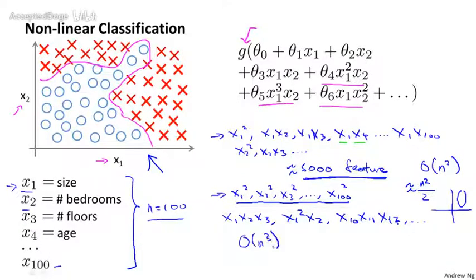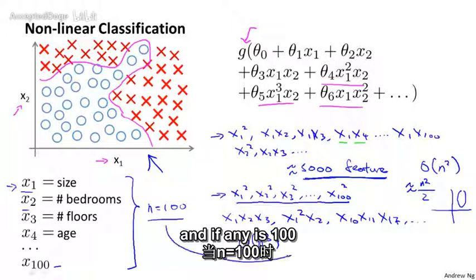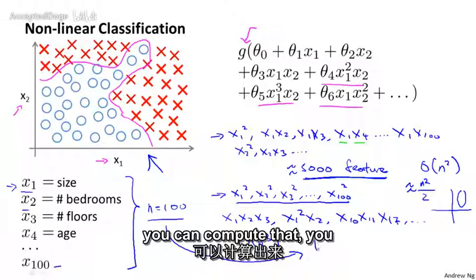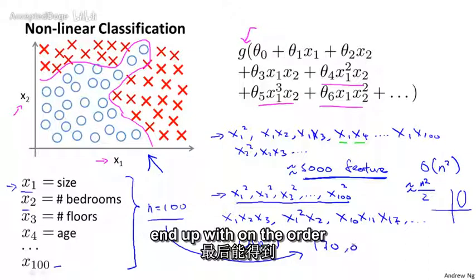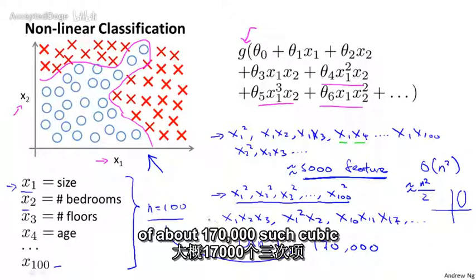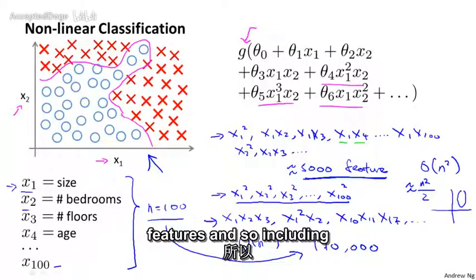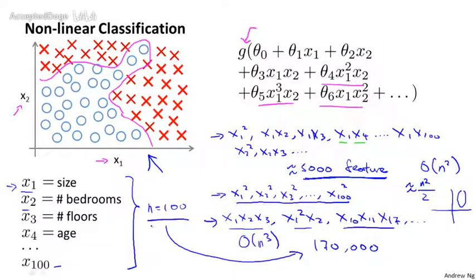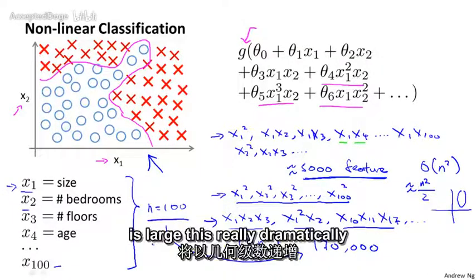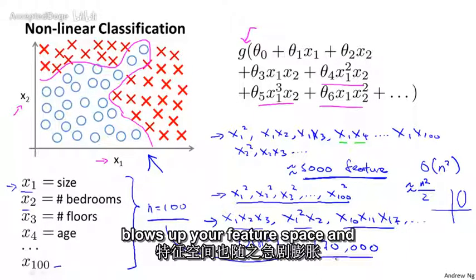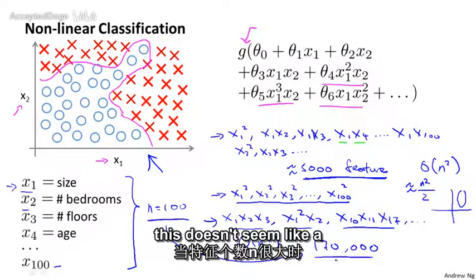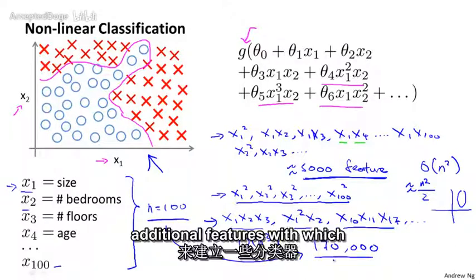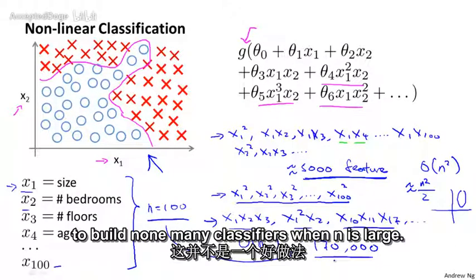And if n equals 100, you can compute that you end up with on the order of about 170,000 such cubic features. And so including these higher order polynomial features when your original feature set n is large, this really dramatically blows up your feature space. And this doesn't seem like a good way to come up with additional features with which to build non-learning classifiers when n is large.